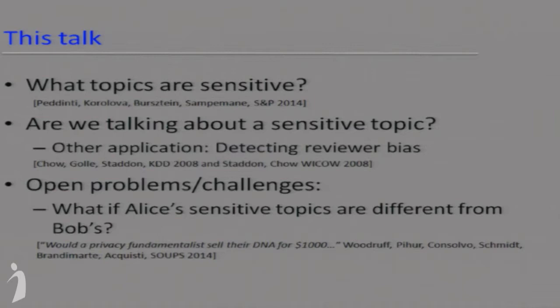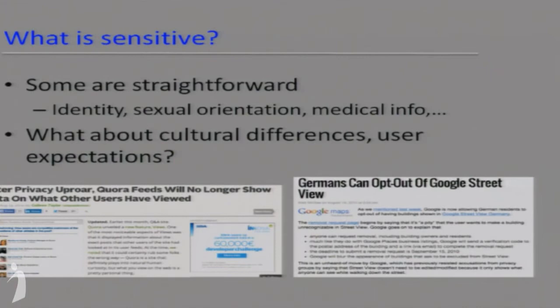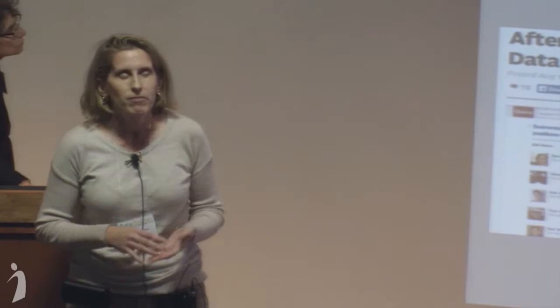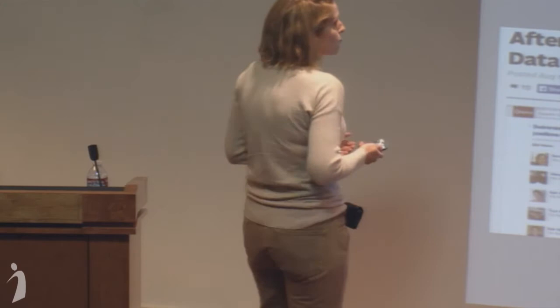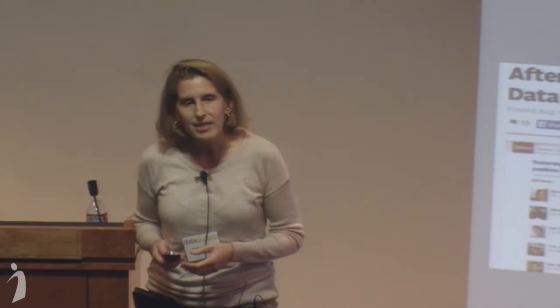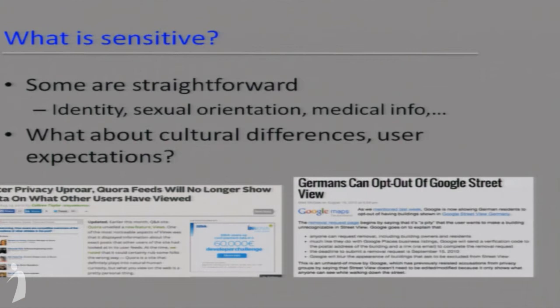I'll try to convince you that determining what's sensitive is not obvious and we really do need some help with this. A natural question after understanding what topics are sensitive is how do you know when you're hitting on a topic that's sensitive? How do you know when a document is about a certain topic? You might say this is pretty obvious — identity, sexual orientation, medical conditions — but the number of privacy incidents we continue to have is some evidence that the obvious ones don't cover everything.